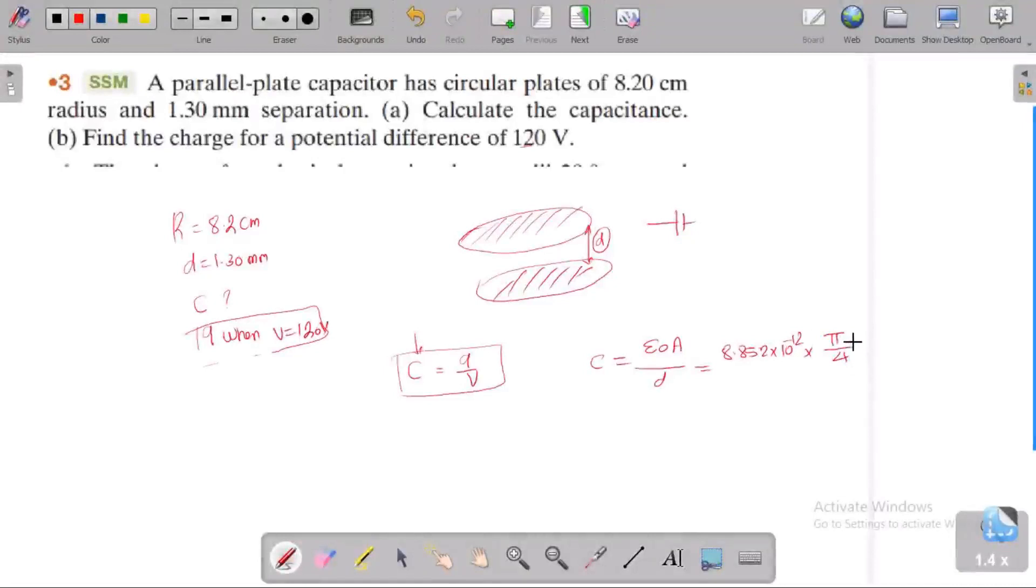What is the radius? 8.2 centimeter. The centimeter is converted into meter, 10 power minus 2, squared, divided by the distance 1.30 millimeter which is converted into meter.